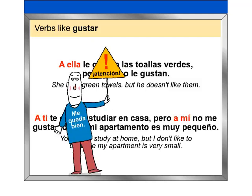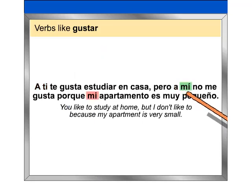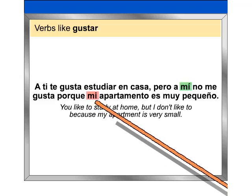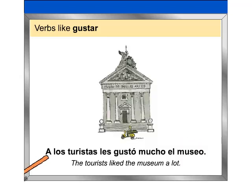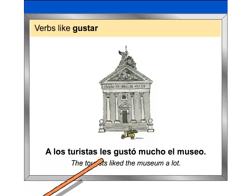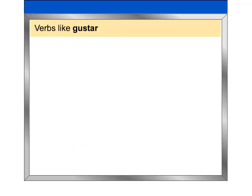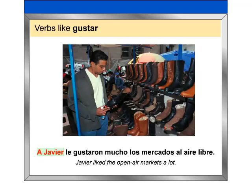Atención. The pronoun mí, which means 'me' in English, has an accent mark to distinguish it from the possessive adjective mi, which means 'my' in English. The construction a plus noun can also be used before the indirect object pronoun to clarify or emphasize who is pleased: A los turistas les gustó mucho el museo. A Javier le gustaron mucho los mercados al aire libre.